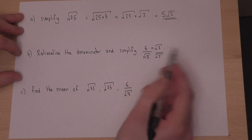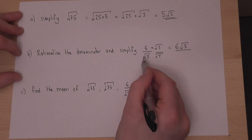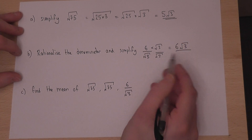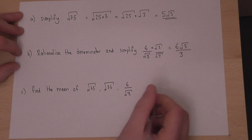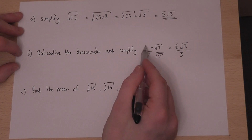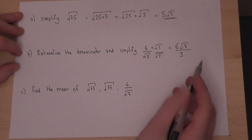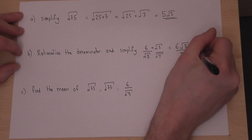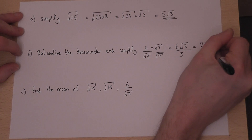Now 6 times root 3 is just 6 root 3. But root 3 times root 3 is root of 9, and root of 9 is just 3. So therefore 6 over root 3 is the same as 6 root 3 over 3. There are two 3s in 6, so this just becomes 2 lots of root 3.